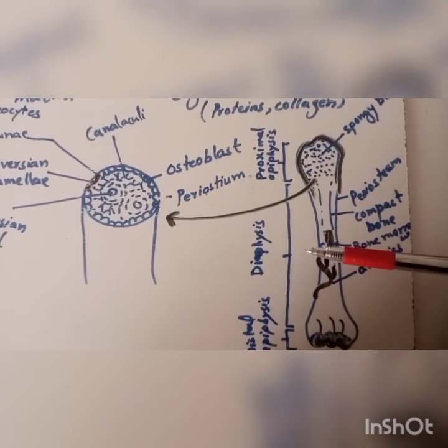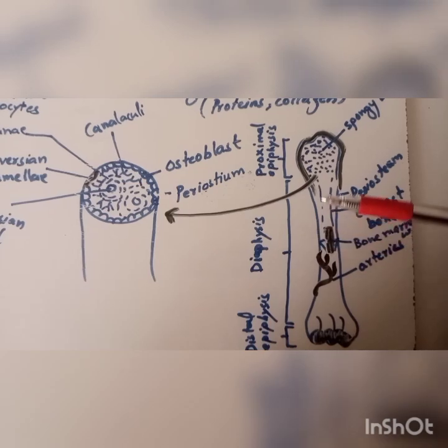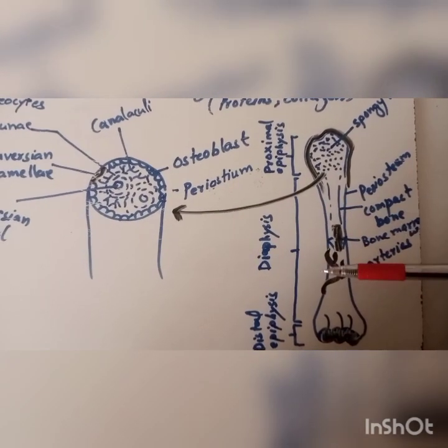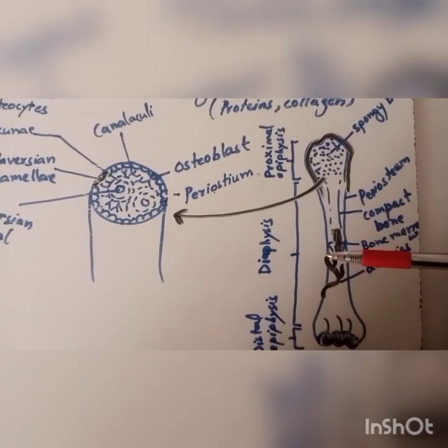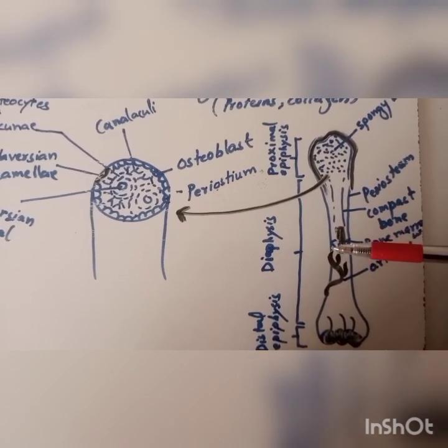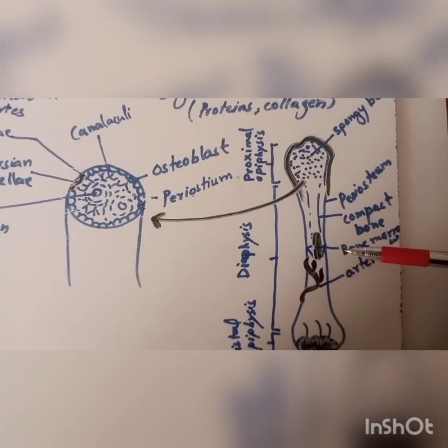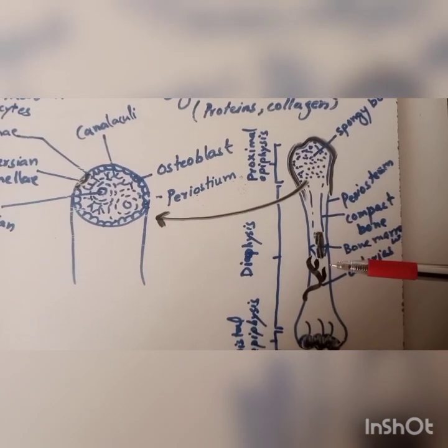While the diaphysis, it is the shaft portion of a long bone. With cortical tissues, it has bone marrow, that is the yellow bone marrow, and adipose tissues.